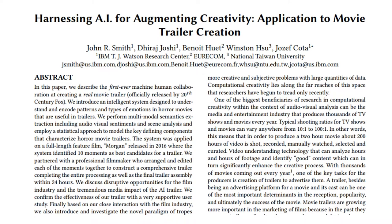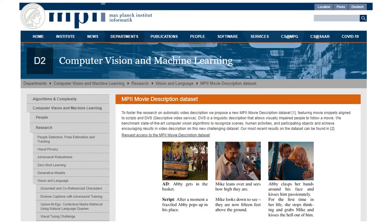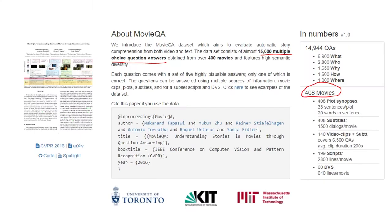IBM came out with this report called Harnessing AI for Augmenting Creativity, Application to Movie Trailer Creation. It came out from the Watson Research Center, and they went over how they went about creating such a system. The system was trained on a huge data set of movie samples, about more than 400 movies. This had information about their subtitles, their screenplays, scripts. Everything about the movie was encoded.